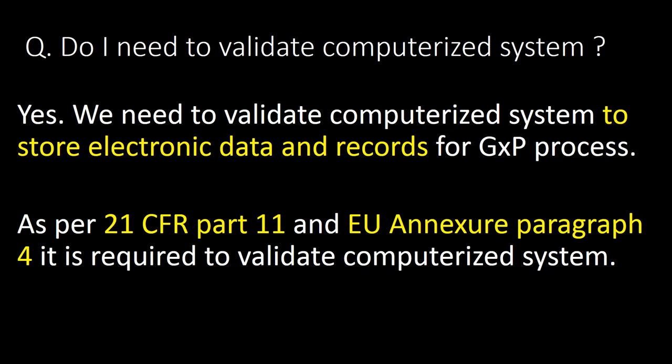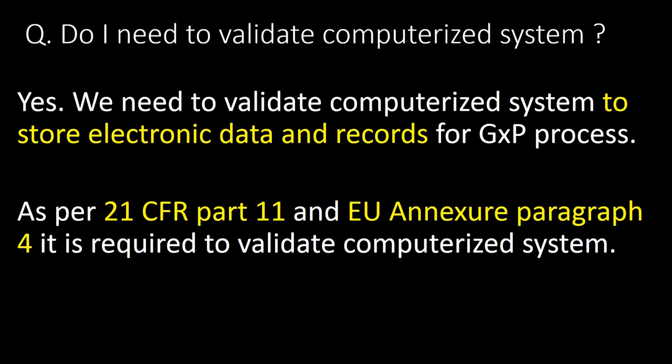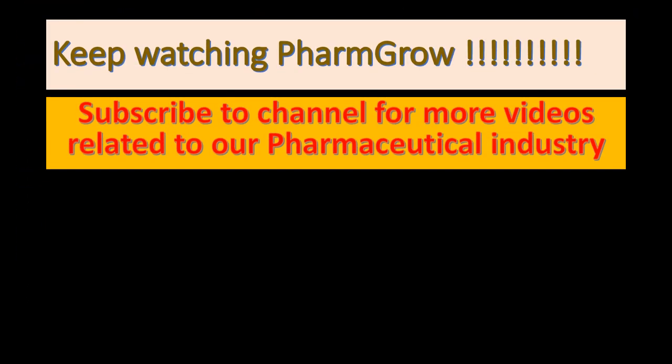The last question is: do I need to validate a computerized system? The answer is yes. We need to validate computerized systems to store electronic data and records for GxP processes. As per 21 CFR Part 11 and EU Annex 11 paragraph 4, it is required to validate computerized systems. As per 21 CFR Part 11 and EU Annex 11 paragraph 3, we need to denote computerized systems.